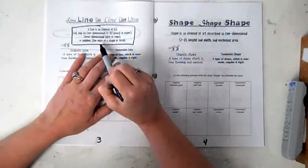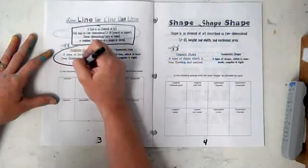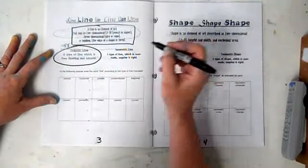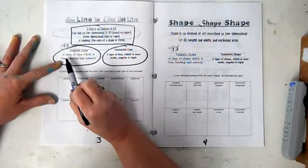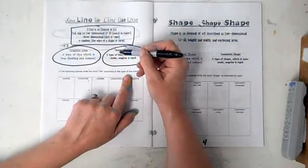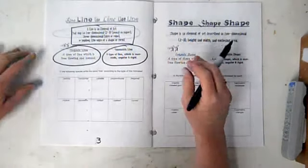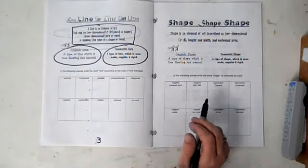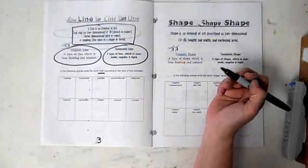Two different types of line: circle the definitions for organic and geometric line. Organic line: a type of line which is free-flowing and natural. Geometric line: a type of line which is man-made, angular, and rigid. In the following spaces, write the word 'line' according to the type of line indicated.